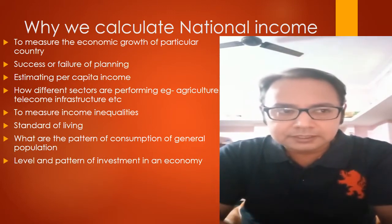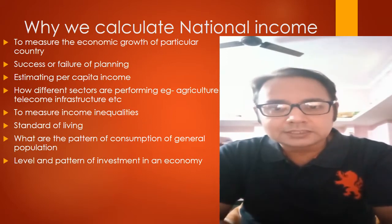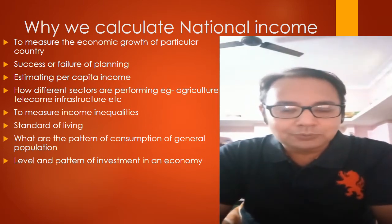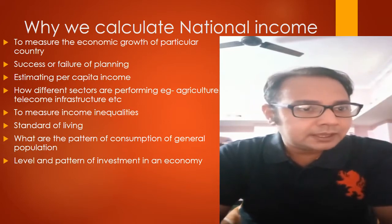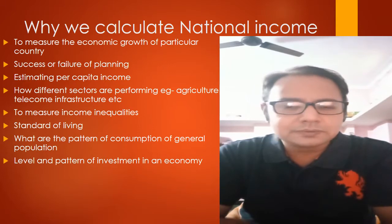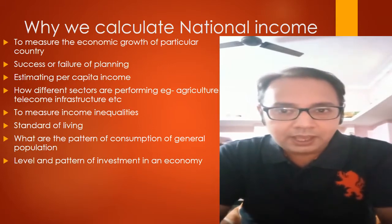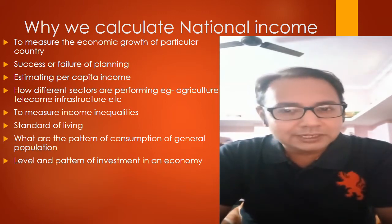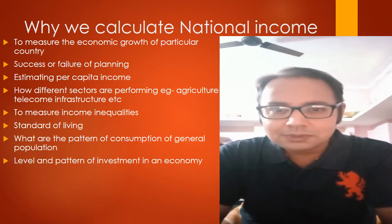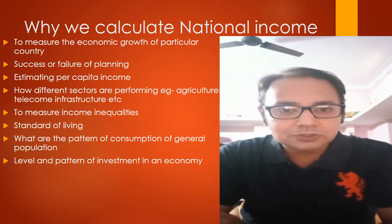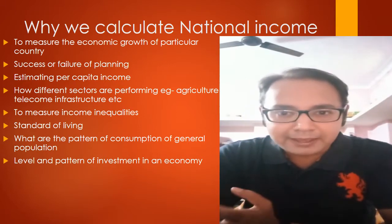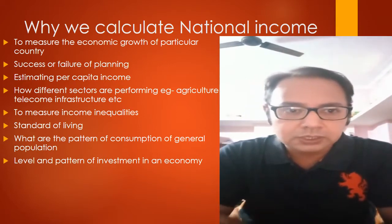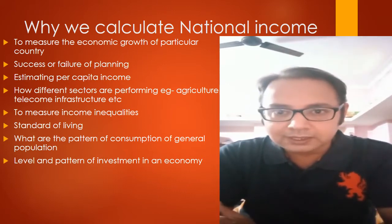The third reason is estimating per capita income — if you know national income, you can divide it by the general population to get per capita income for a particular year. There are three types of sectors in an economy: the primary sector related to raw materials, mining, quarrying and agriculture; the secondary or manufacturing sector where we take raw materials, process them and make final goods; and the tertiary or service sector — banking, hospitality, insurance — which is the best-performing sector compared to the other two.